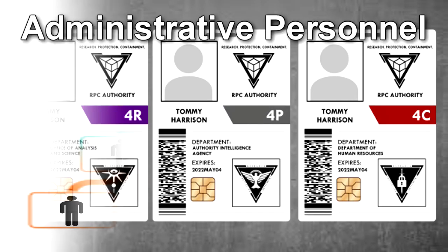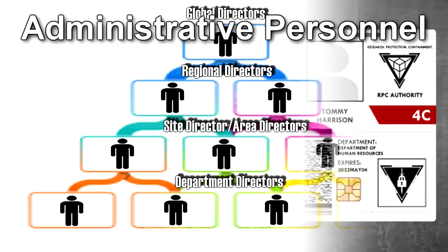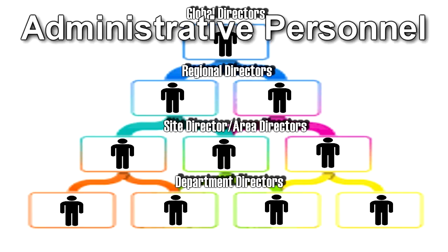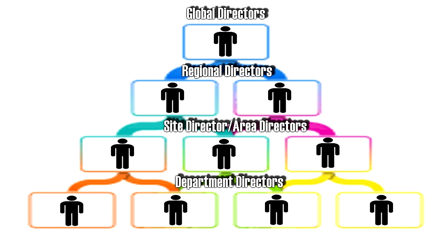Administrative Personnel: The authority maintains a hierarchical staffing structure in order to facilitate information compartmentalization, day-to-day management, and the maintenance of the chain of command in the event of catastrophic containment and or security breaches. While administrative personnel are assigned a branch code as part of their individual security rating, their duties are frequently much broader than encompassed by a single division.